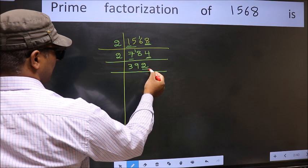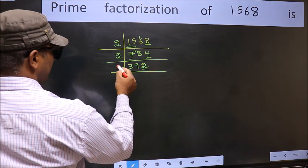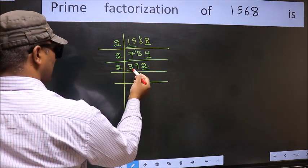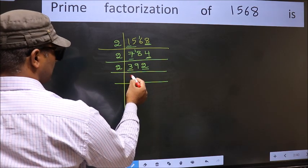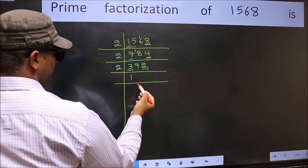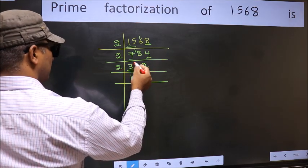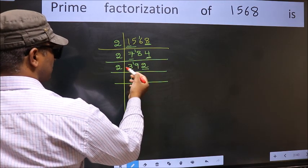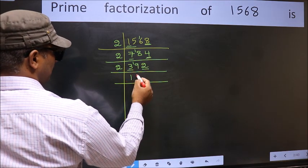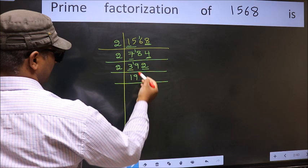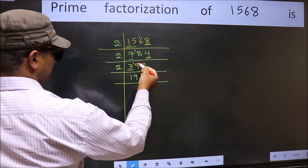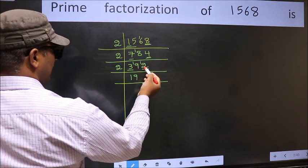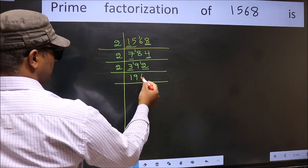Now the last digit is 2, which is even, so take 2. First number is 3. A number close to 3 in the 2 table is 2×1=2. 3-2=1, carry forward 1, giving 19. A number close to 19 in the 2 table is 2×9=18. 19-18=1, carry forward 1, giving 12. When do we get 12 in the 2 table? 2×6=12.